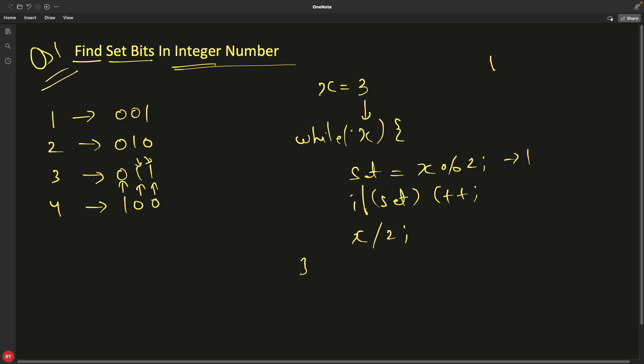We'll check if 1 is true. Yes, it is true. We'll come back. 1 modulo division 2. Answer is still 1. Then you will have this true. Count plus plus. Count will be 2 now. Count is 2 now. And then we'll come here. 1 divided by 2. This time it is going to be 0.